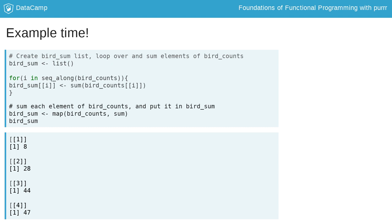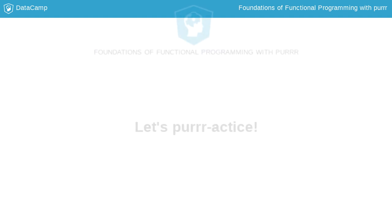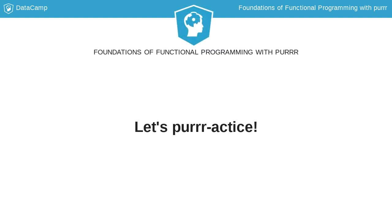The output of both methods is the same. However, purrr makes our code simpler by letting us focus on the pieces we are working with instead of the structure of the for loop. Now let's get started.